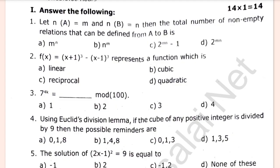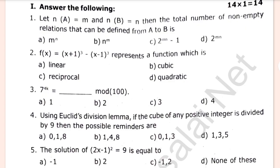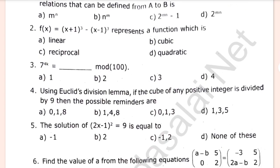Let's go to the video. The total number of non-empty relations that can be defined from A to B is... If you want to talk about the questions, please check in the comment box.